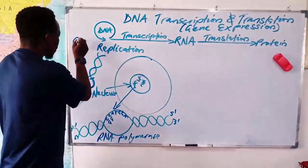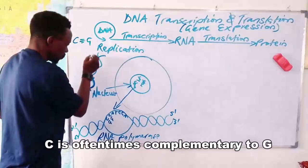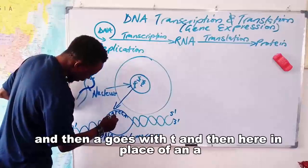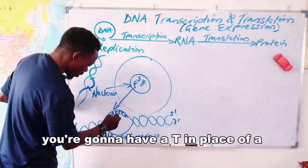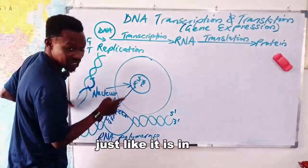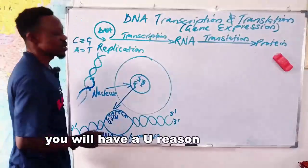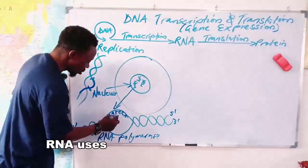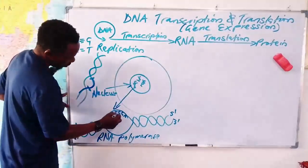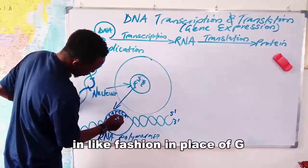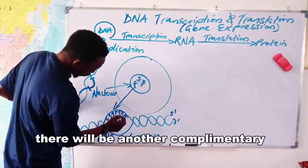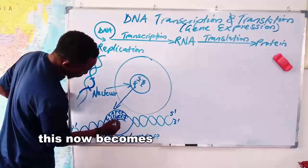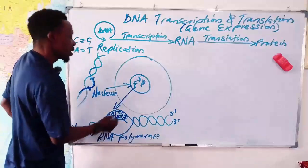You will recall that C is complementary to G. Then A goes with T. Here in place of a T, instead of having an A — as it is in DNA — you will have a U, because RNA does not have thymine; RNA uses uracil in place of thymine. In like fashion, in place of G there will be a complementary C, and another complementary C, and so on.